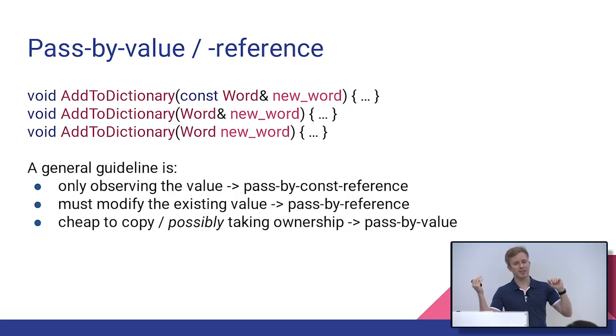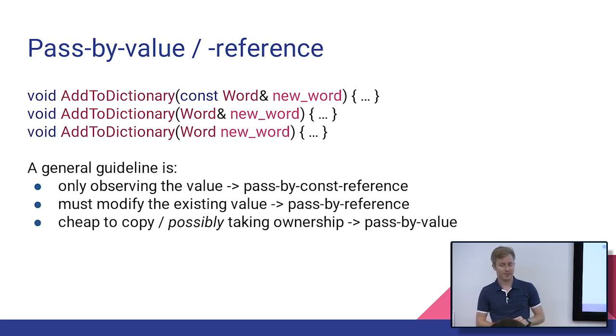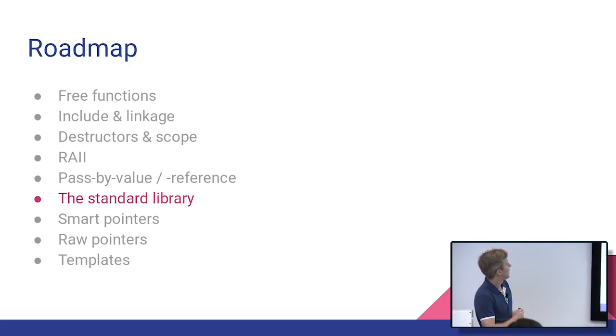And then the last one, when you don't pass a conference at all, is either it's really cheap to copy the object, or in new style C++, if you're potentially taking ownership of that object. So for example, if somebody says, I'm totally done with this. I'm not going to use it anymore. I'm handing it off to you. It's now your responsibility. If I'm the function who's taking that thing handed off to me, I'm potentially taking ownership. And that's when I might do this.